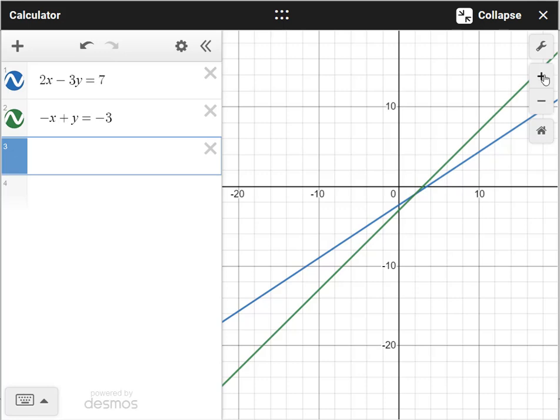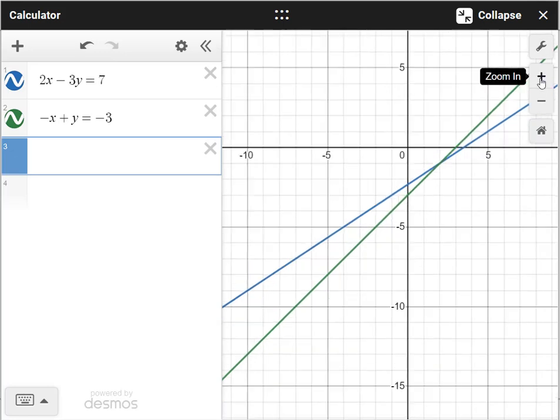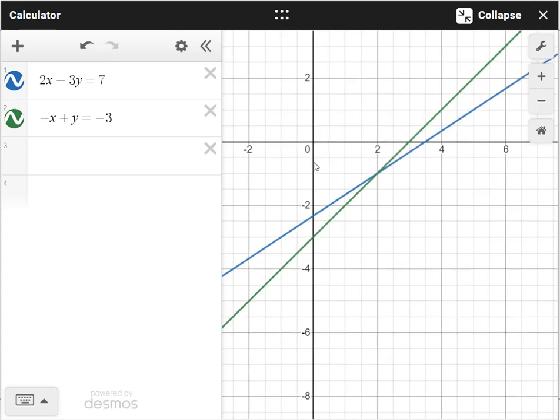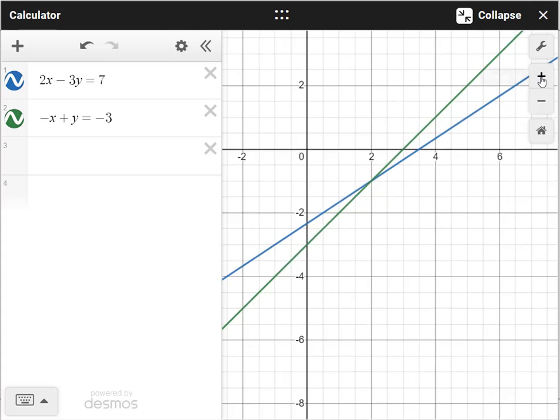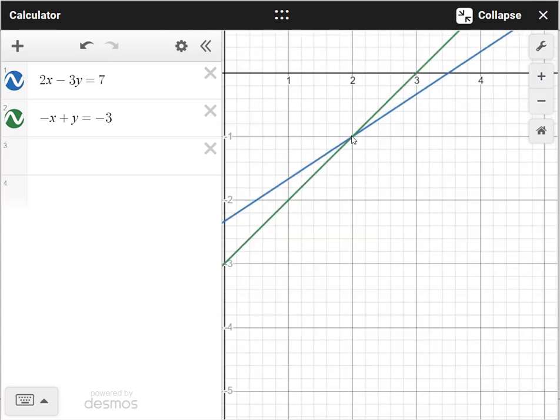And we'll zoom in. They're asking you to find the solution or the ordered pair of values that satisfies this. So you're looking for the point of intersection. And that's 2 comma minus 1. The x value is 2, y value is minus 1.